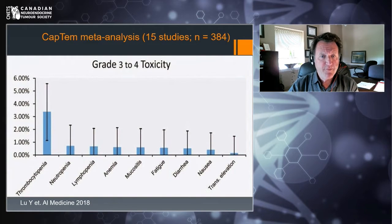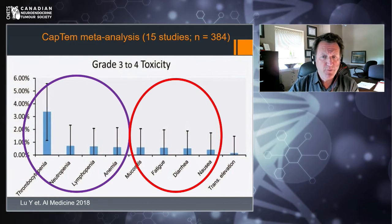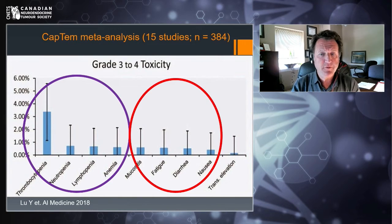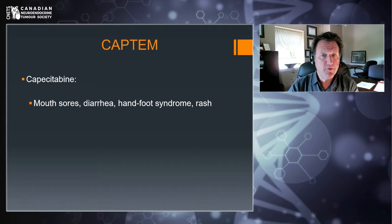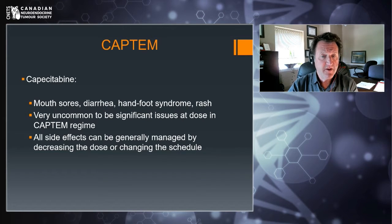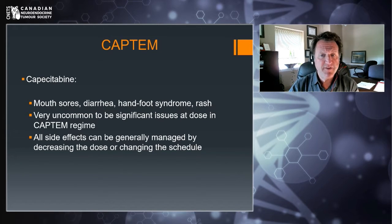What's incredible about this regimen is that when you look at the data, the risk of blood problems and the risks of other issues that can interfere with quality of life — like mouth sores, fatigue, diarrhea, and nausea — are less than 3% for significant side effects. So compared to almost all other chemotherapy treatments in oncology, CAPTEM tends to be incredibly well tolerated for the majority of patients. The capecitabine component can cause mouth sores, diarrhea, hand-foot syndrome, and rash — but the dose used here is quite low compared to other oncology contexts, so these are very uncommon as significant problems.